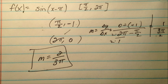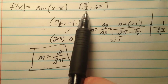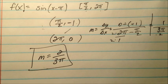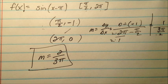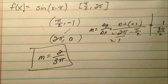So the average rate of change is 2 over 3 pi — that's the slope of the secant line you saw in the graph. For average rate of change, we find the secant line with endpoints at our given interval — in this case pi over 2 and 2 pi — and find its slope. That gives us a general sense of what the change is doing over the whole interval, not at any particular point.